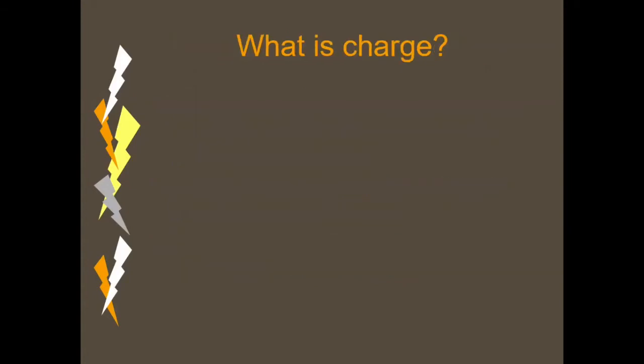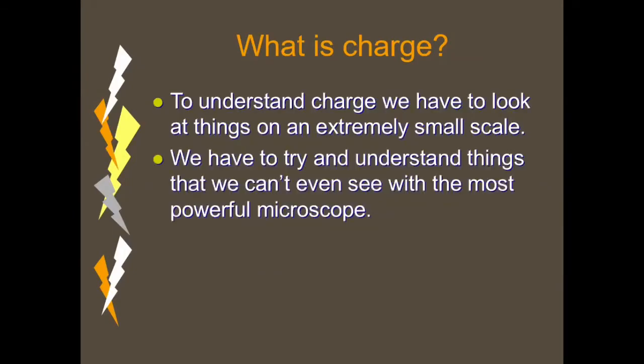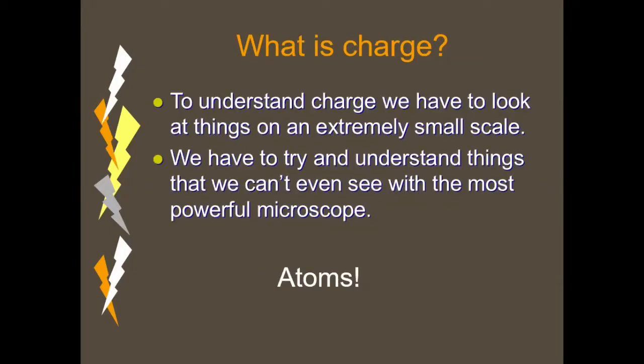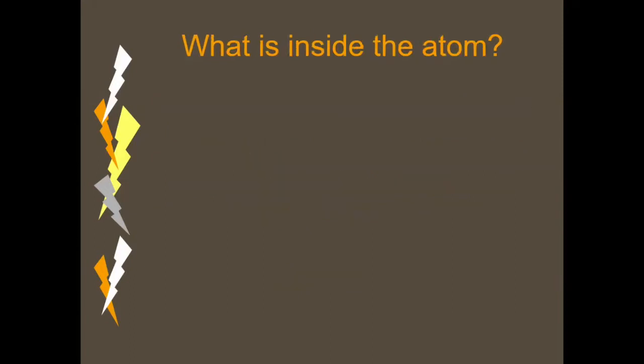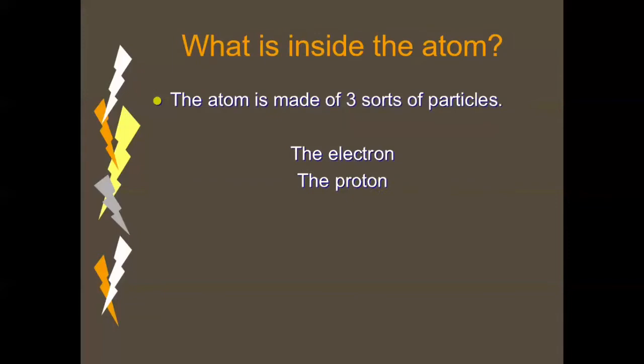Now in order to understand what is a charge, we need to understand that everything is made up of atoms. Atoms are basically the smallest unit of matter. So every atom has three parts: the first part is the electrons, the second part is the proton, and the neutron.